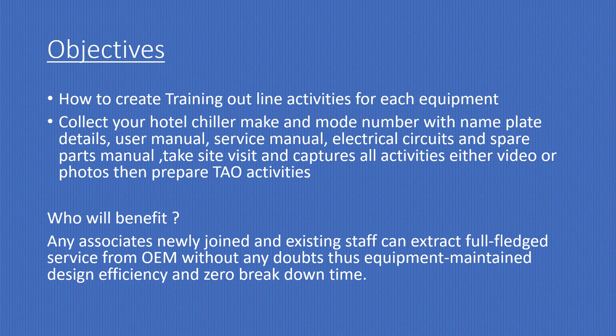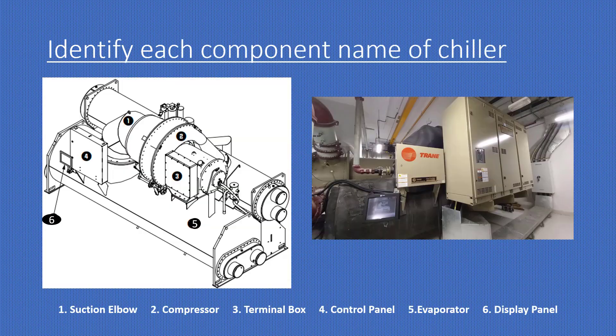O&M means your Original Equipment Manufacturer. For example, if it is a Trane unit and a Trane service engineer comes, your team should be able to supervise them. The first thing is to identify each component name of the chiller, and ensure the equipment maintains design efficiency and zero breakdown time.